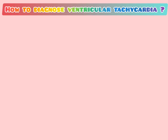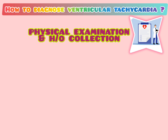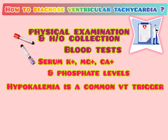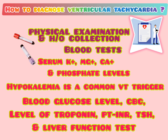To diagnose ventricular tachycardia, the physician performs a physical examination and history collection. Blood tests include electrolytes such as serum potassium, magnesium, calcium, and phosphate levels — hypokalemia is a common VT trigger and is commonly seen in patients taking diuretics. Additional blood tests include blood glucose level, CBC, troponin level, PT/INR, TSH, and liver function test.